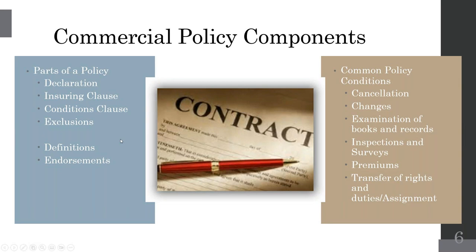Named insured means anyone named on the policy — both Bill and Bob in Bill and Bob's Hotel. The first named insured (Bill) makes the decisions. Officers and directors of a company are also covered as insureds even if not specifically named. It's similar to lending your car to a friend — they're not on your policy but they're still covered should they get into an accident.